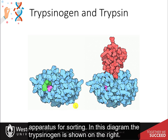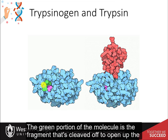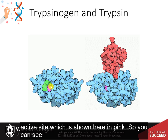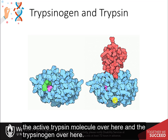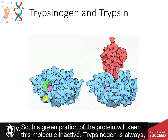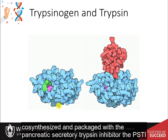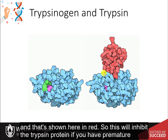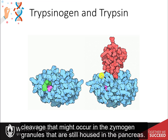In this diagram, the trypsinogen is shown on the right. The green portion of the molecule is the fragment that's cleaved off to open up the active site, shown here in pink. You can see the active trypsin molecule and the trypsinogen side by side. Trypsinogen is always co-synthesized and packaged with a pancreatic secretory trypsin inhibitor, the PSTI, shown here in red.